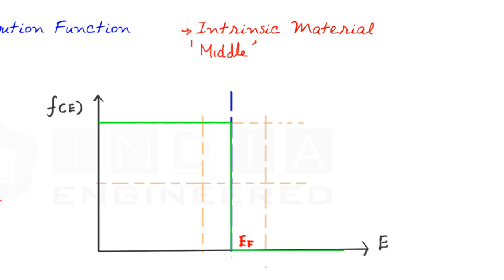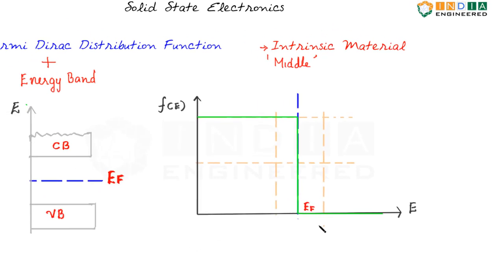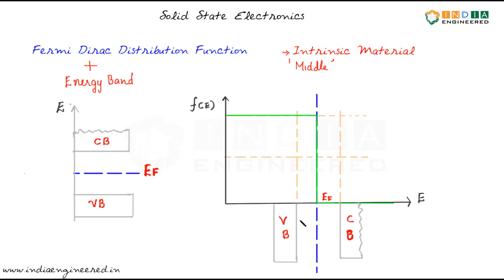Now, let's bring this band diagram and coincide with our Fermi Dirac distribution function. So, it looks something like this. We have our Fermi level. What we have done is we have just rotated it and placed it over this diagram to align the Fermi level.